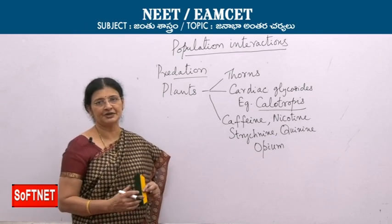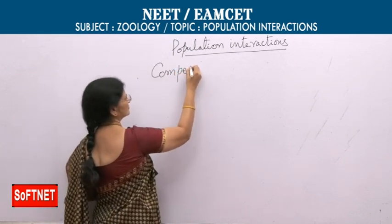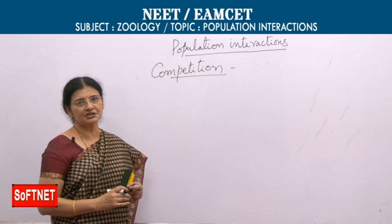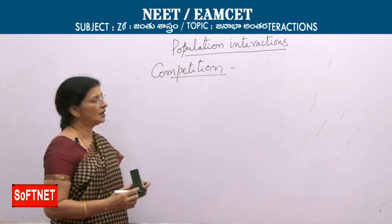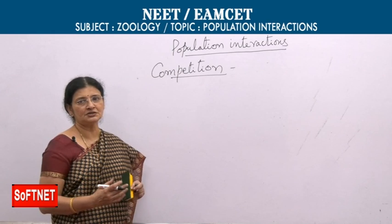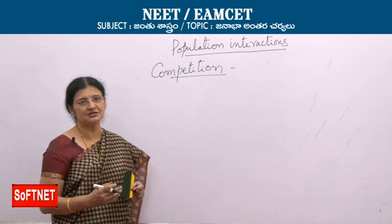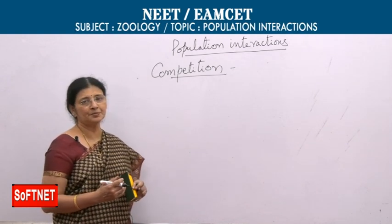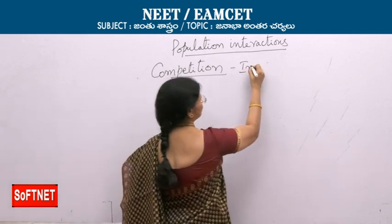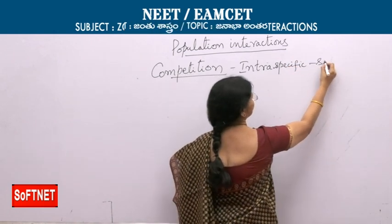Now let's look at competition. In Darwin's natural theory of selection, competition between members of the same species — intraspecific competition — is very severe. They compete for food, space, and also for mating purposes during breeding season. This intraspecific competition is the most severe type.